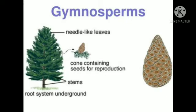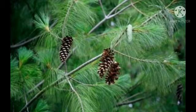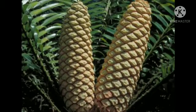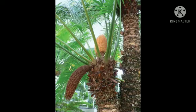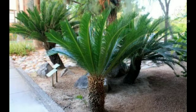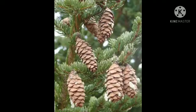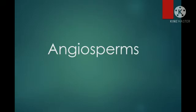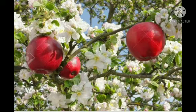Gymnosperms have well-developed roots, stems, and leaves. They have fine needle-like leaves, as you can see in this picture. They produce seeds in special structures called cones. This is the picture of the cycas plant — it has needle-like leaves and cones.